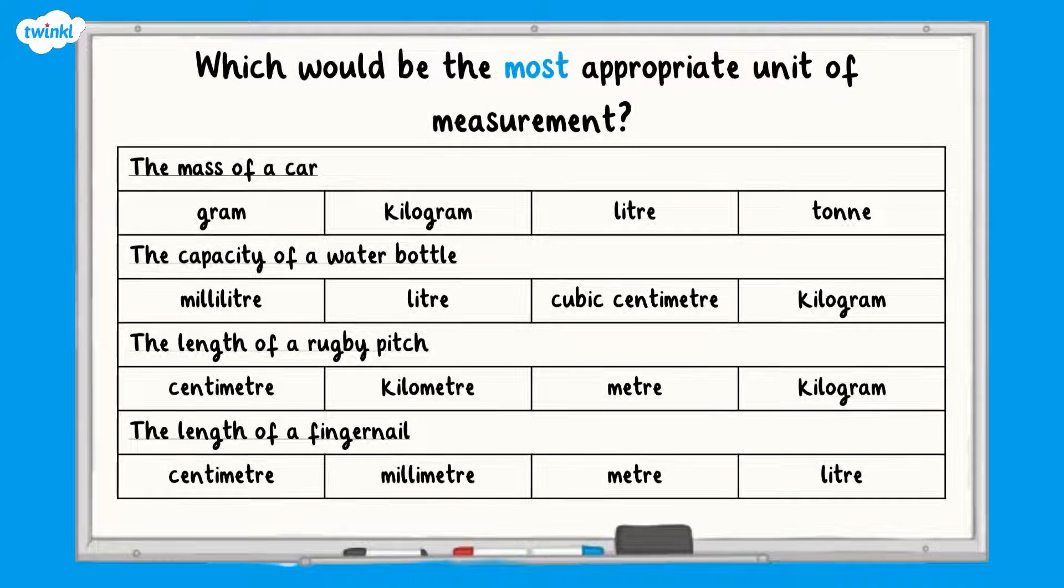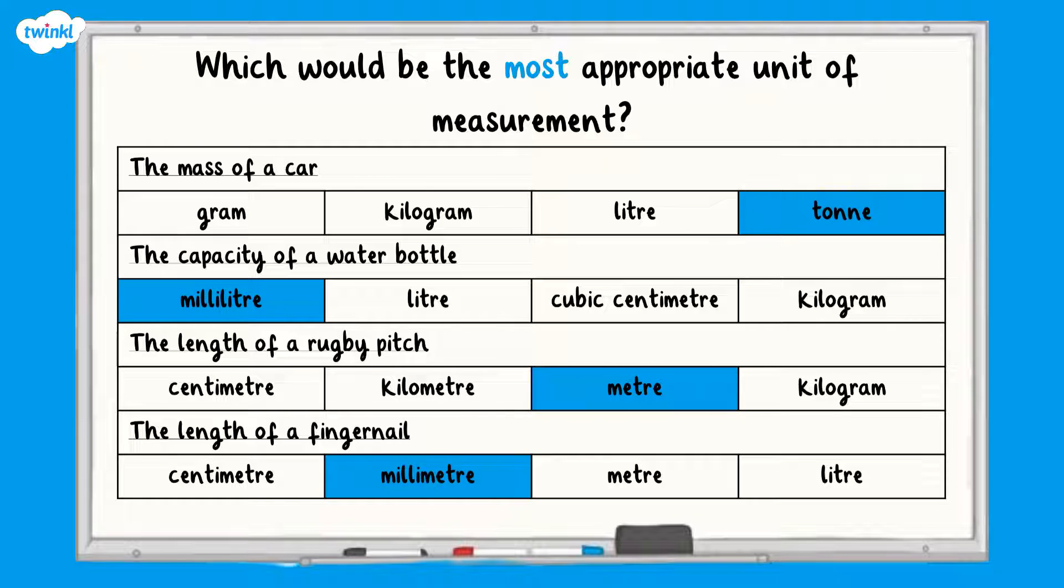For the next question, have a think about which would be the most appropriate unit of measurement. All finished? Well done, here are the answers. The most appropriate unit for the mass of a car would be a ton. For the capacity of a water bottle it would be millilitres. For the length of a rugby pitch it would be metres. And for the length of a fingernail it would be millimetres.